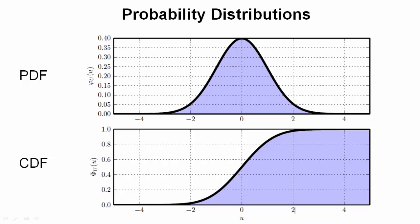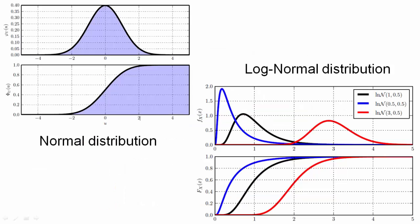A random variable is typically associated with a probability distribution. In reliability analysis, we are primarily interested in continuous random variables. A probability distribution is characterized by its probability density function (PDF) or cumulative distribution function (CDF). The PDF integrates to 1 and is the derivative of the CDF. The CDF represents the probability that a realization of a random variable is smaller or equal than a particular value. Different types of probability distributions exist, for example, the normal and the log-normal distribution.